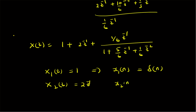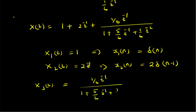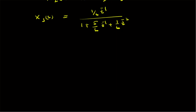So x₂(n) will be 2·δ(n−1), that is the displaced or shifted version of the unit sample function multiplied by 2. Finally, X₃(z) is a proper fraction: X₃(z) = (1/6)z⁻¹ divided by 1 plus (5/6)z⁻¹ plus (1/6)z⁻². We now need to write this function in a form that has only positive powers of z.